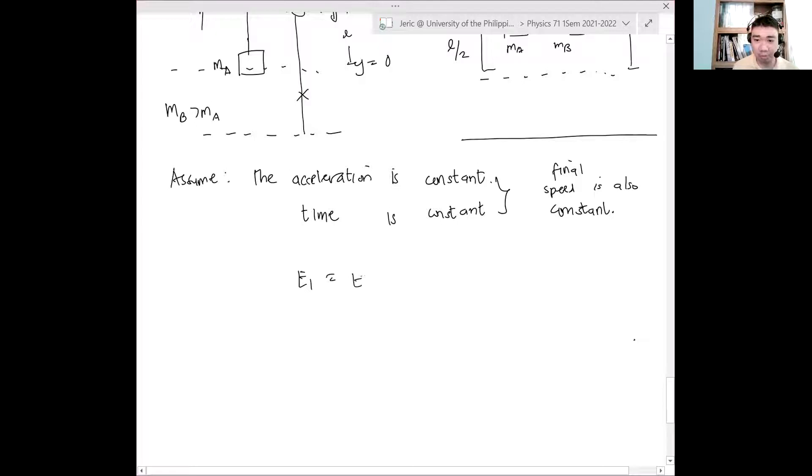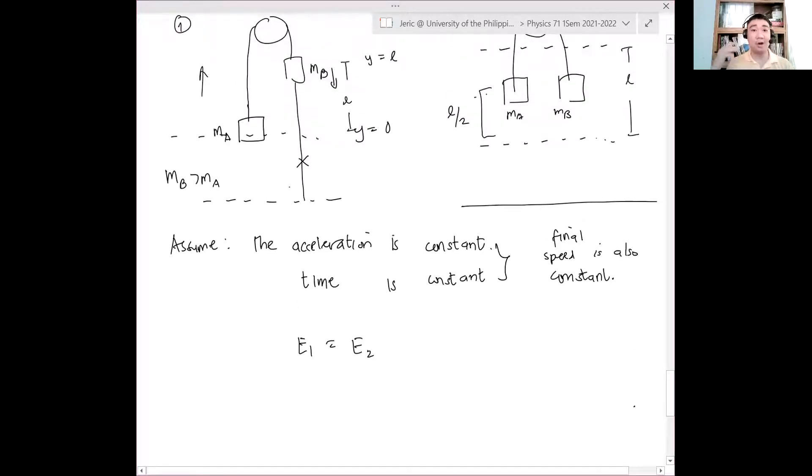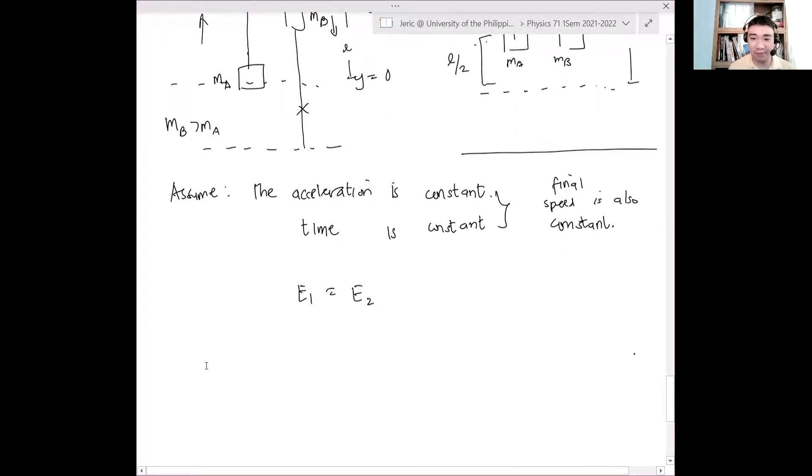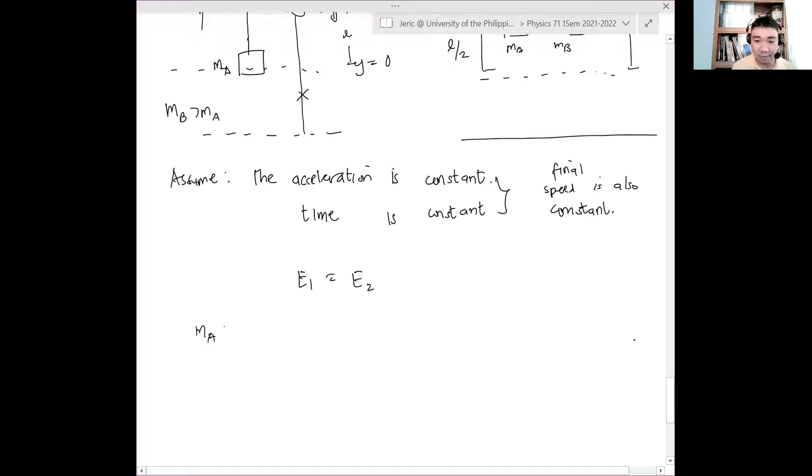We don't know yet what value that acceleration is. Of course we know by hindsight. But our assumption is the acceleration is constant because we cut the string. Now if the acceleration is constant and the time is constant—same time for them to reach the same position—and the final velocity is also constant. The final speed of the first mass equals the final speed of the second mass. They have the same speed, not necessarily the same velocity, because one is upward, one is downward.